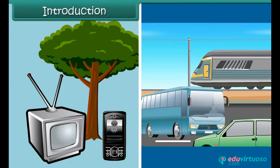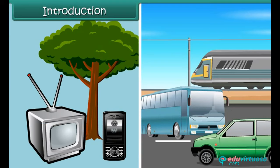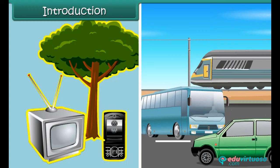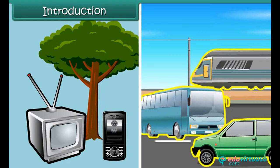Look around yourself and you will find objects of different kinds such as television, mobile, trees, cars, buses, trains, etc.